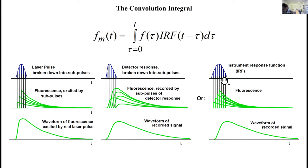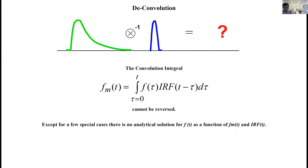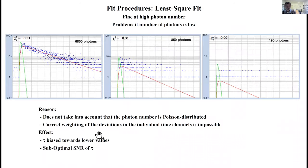We know how to do this and it sounds simple, but there's still a problem because we have this wonderful convolution integral but it's not possible to mathematically reverse this integral. There's no way to find out what the real fluorescence function is if we have the measured function and instrument response functions, except for a few very special cases. There's no analytical solution for that. We have to resort to some kind of fitting procedure.